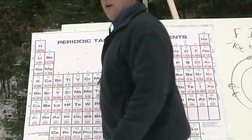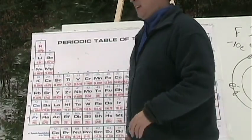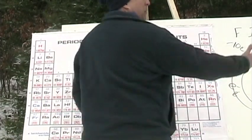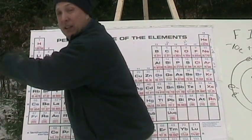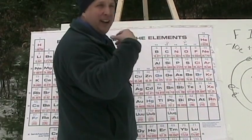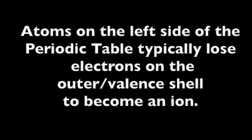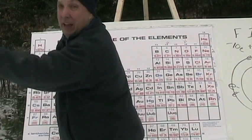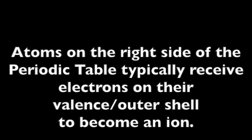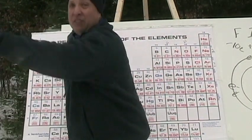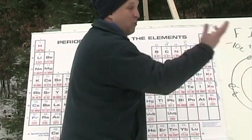Now we'll be learning about how an atom becomes an ion. An atom becomes an ion because it wants to have a full valence shell. Atoms on the left side of the periodic table lose their electrons to become an ion. Atoms on the right side receive electrons. Left loses electrons and an energy shell. Right receives electrons.